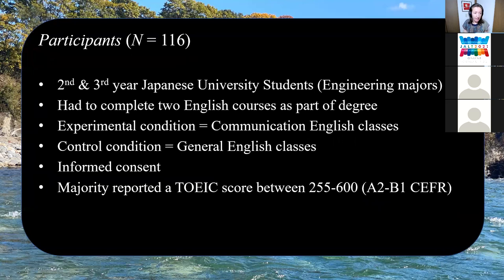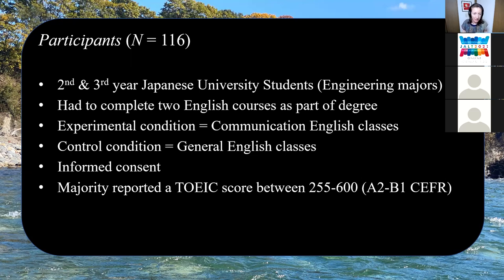My participants were second and third year Japanese university students, engineering majors. They had to complete two English courses as part of their degree. The experimental condition students came from communication English classes and the control condition came from general English classes. They were informed about the study and those who consented had their data included. The majority reported a TOEIC score between 275 and 600 — so roughly intermediate, A2 to B1 level.